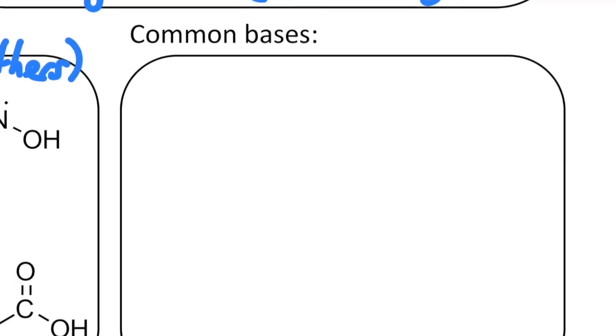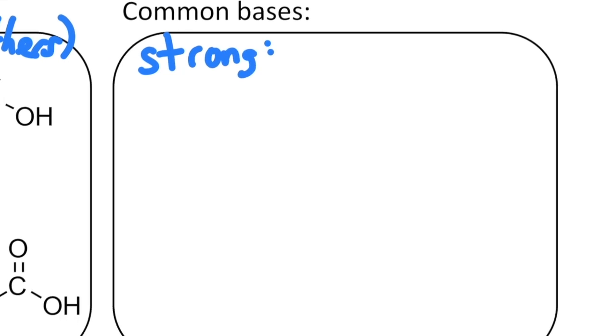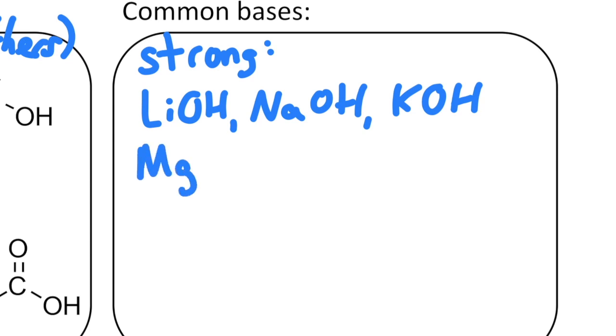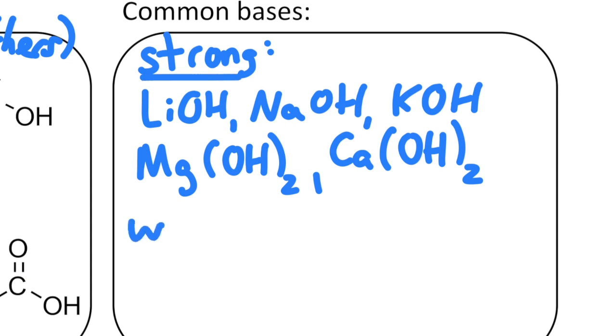Well, the strong bases are any metal hydroxide, as long as it comes from the first two groups of the periodic table. So lithium hydroxide, sodium hydroxide, potassium hydroxide. Those all count. Alkali hydroxides. Group two also works, so magnesium hydroxide is a strong base. Calcium hydroxide is a strong base, meaning it dissociates completely when we have it in a reaction.